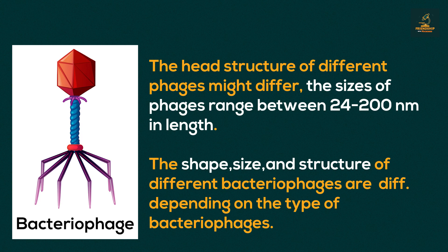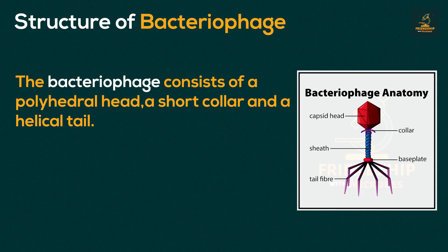The head structure of different phages might differ, and the size of phages ranges between 24 to 200 nanometers in length. The shape, size, and structure of different bacteriophages vary depending on the type. Like bacteria, bacteriophages are also classified into different orders and families depending on their morphology and genetic material.